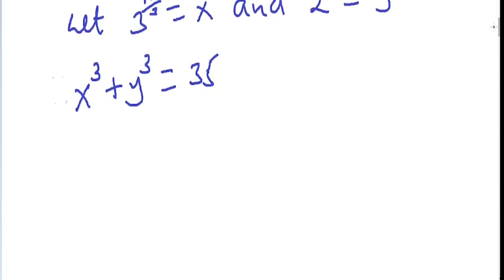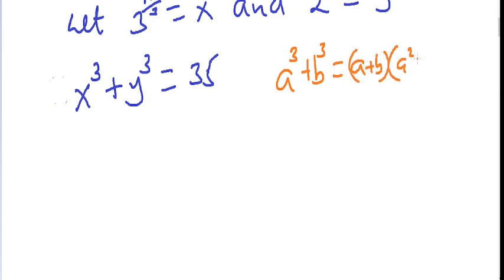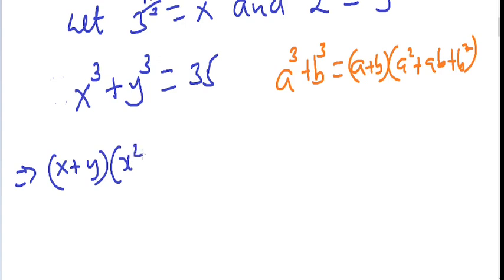We have formed the sum of two cubes. From the formula, a cubed plus b cubed is factorized as (a plus b) times (a squared minus ab plus b squared). Using this rule on our equation, it becomes x plus y, times x squared minus xy plus y squared, equals 35.